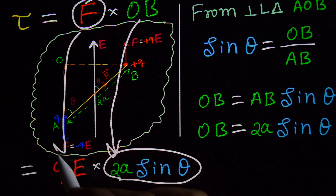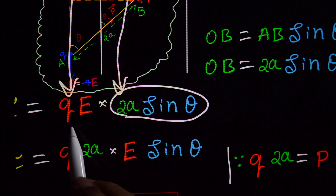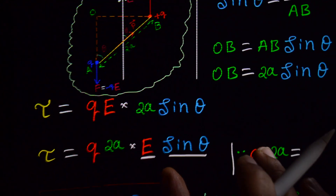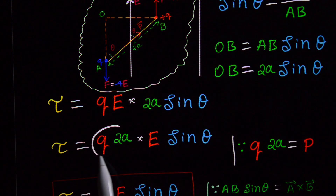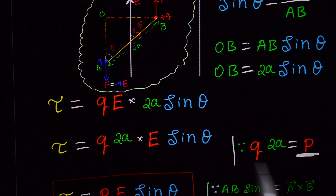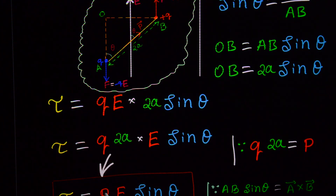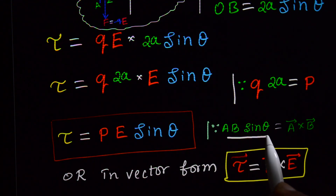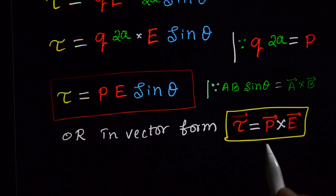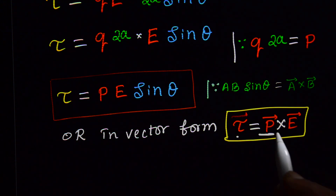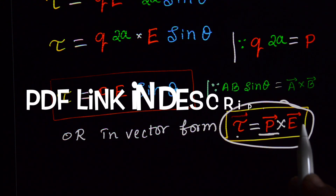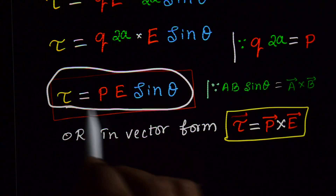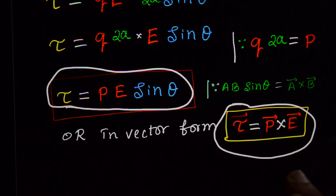So torque equals F into OB equals Q into E into 2A sin theta. Since Q into 2A equals P, the dipole moment, torque equals P into E into sin theta. Since A times B sin theta equals the magnitude of A cross B, in vector form we can write torque vector equals vector P cross vector E. This is the torque experienced by the dipole when it is placed in a uniform electric field.